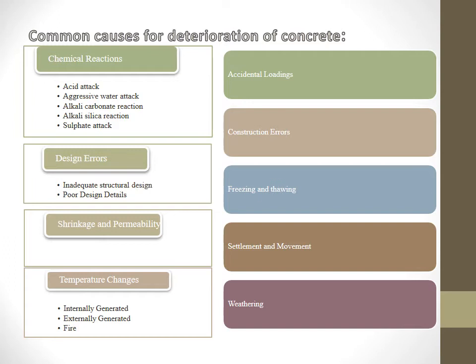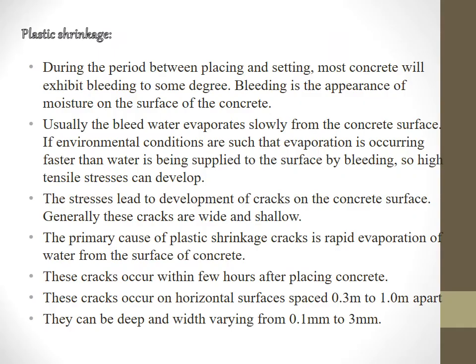Common causes for deterioration of concrete include nine causes. First, chemical reactions — which consist of acid attack, aggressive water attack, alkali carbonate reaction, alkali silica reaction, and sulfate attack. Second, design errors — inadequate structural design and poor design details. Third, shrinkage and permeability — plasticity and permeability are influenced by cement content, quality of aggregate, water cement ratio, age of concrete, degree of compaction, and adequacy of curing. Fourth is temperature change — internally generated, externally generated, fire, etc. Fifth is accidental loading, sixth is construction errors, seventh is freezing and thawing, eighth is settlement and movement, and ninth is weathering.